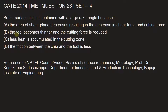Option B: the tool becomes thinner and the cutting force is reduced. Option C: less heat is accumulated in the cutting zone. Option D: the friction between the chip and the tool is less. Let's see what the answer is.